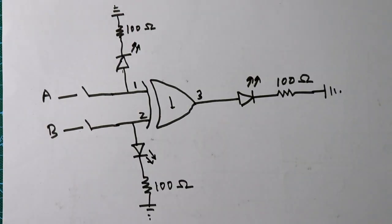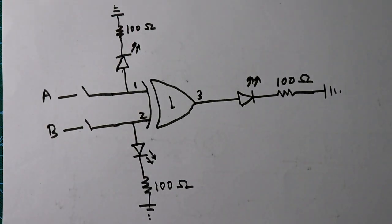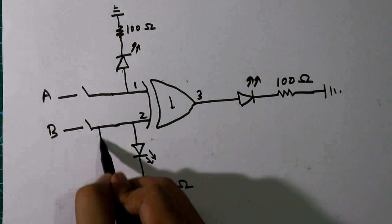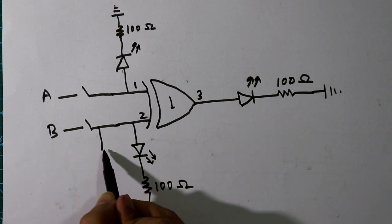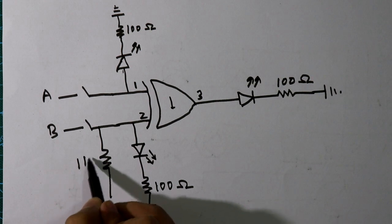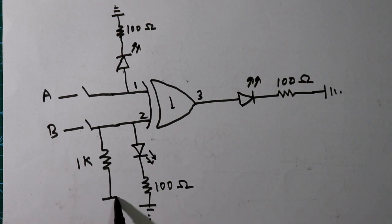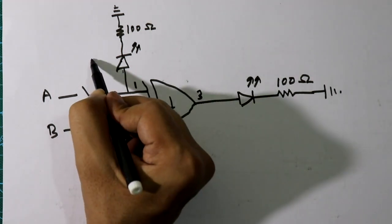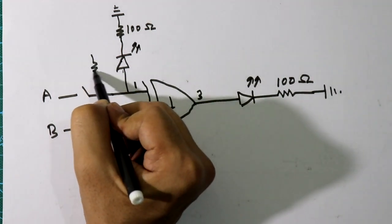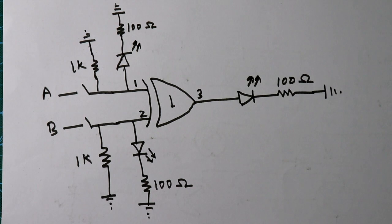Sometimes this type of IC can produce errors, so to minimize the error we need to connect a pulldown resistor — the value is 1k ohm — connected to ground for each input.